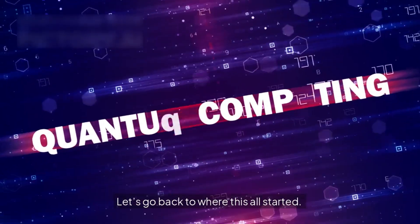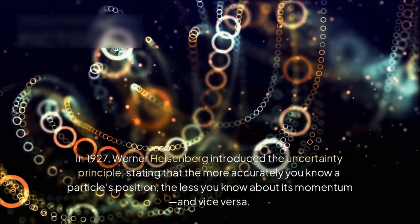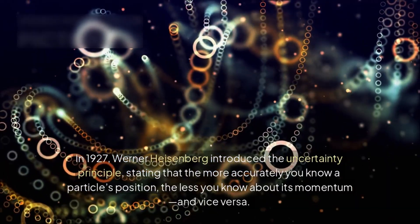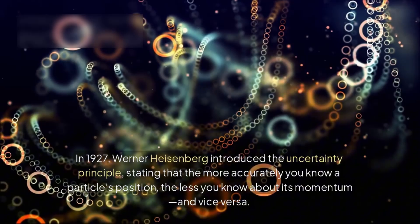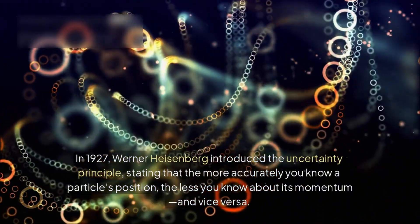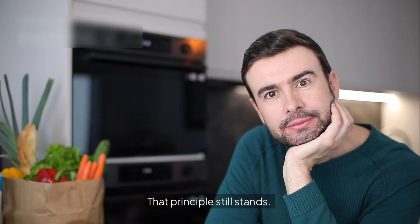Let's go back to where this all started. In 1927, Werner Heisenberg introduced the uncertainty principle, stating that the more accurately you know a particle's position, the less you know about its momentum, and vice versa. That principle still stands.